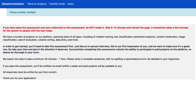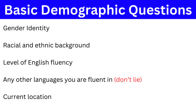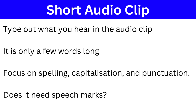You will then have to answer a few multiple choice questions on your gender identity, racial and ethnic background, and level of English fluency. Here you can also list any other languages that you are fluent in, and you will also be asked to enter your location. You will next have to listen to a short audio clip that they provide the link to and you will need to type out what is said. For this, ensure you are spelling the words correctly and using the correct grammar including punctuation and capitalization.